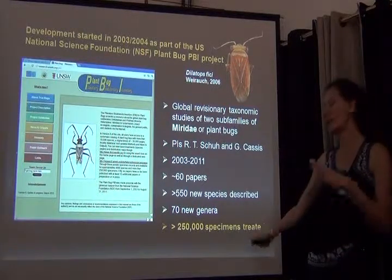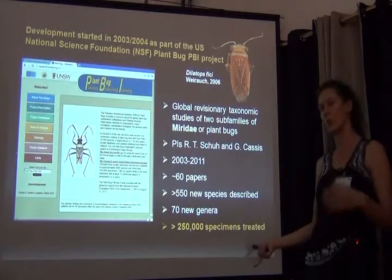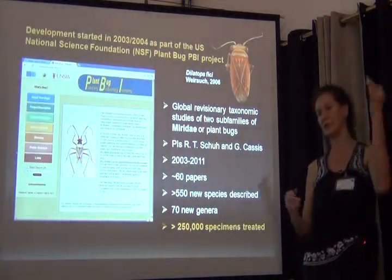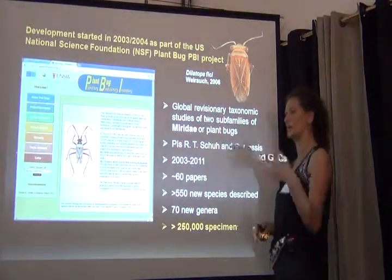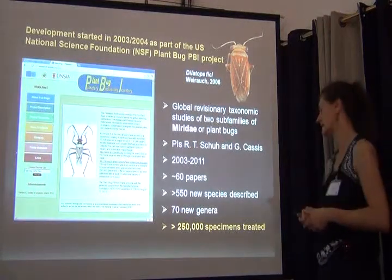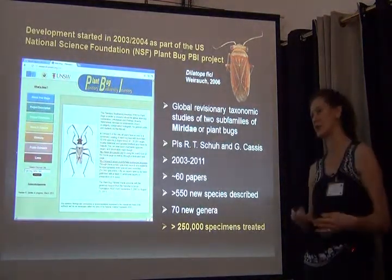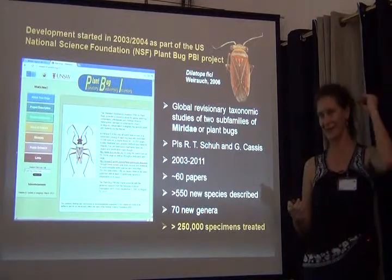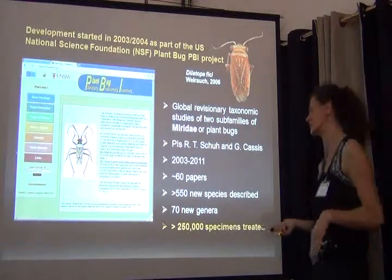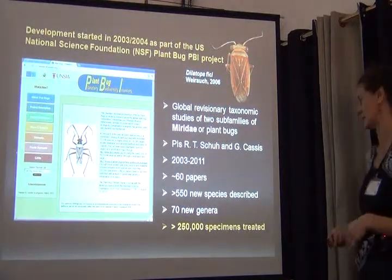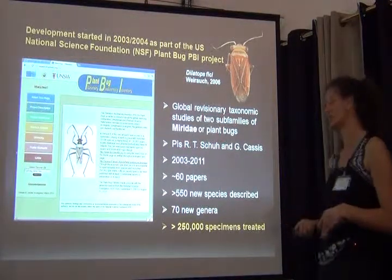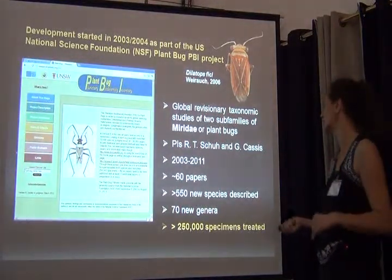Throughout this project we looked at about a quarter of a million specimens, most of them examined under revisionary aspects to make sure that — well, obviously we described a lot of new species — but also all the information entered during this project is really high quality data where we're very confident about species identifications. Not a huge amount of data compared to some other projects, but superb information.